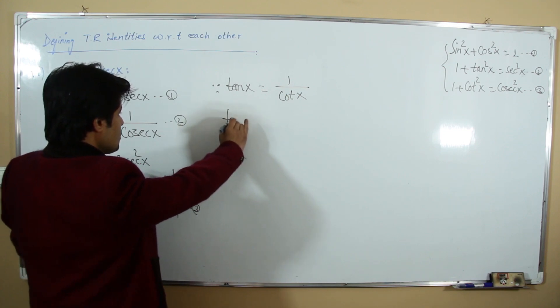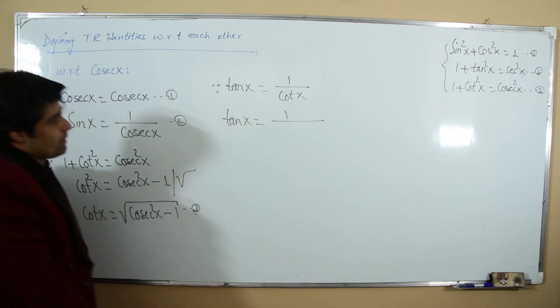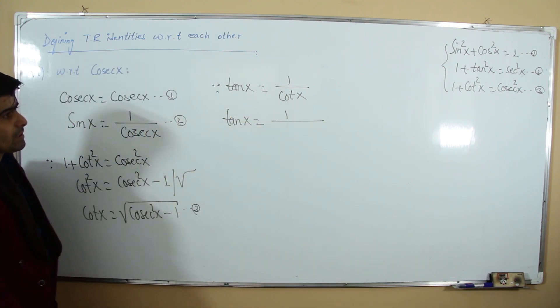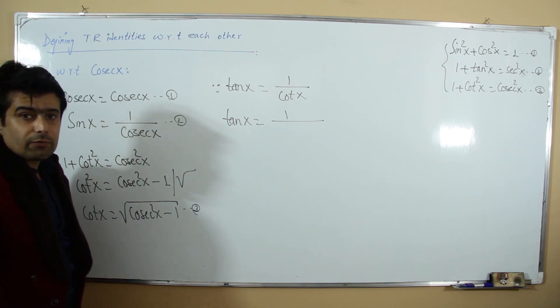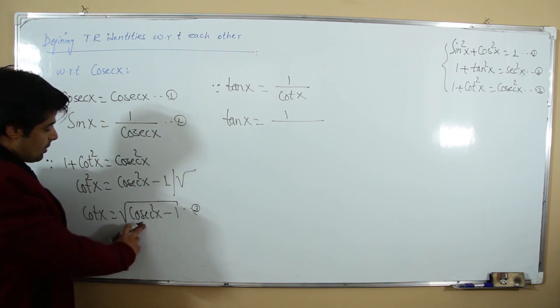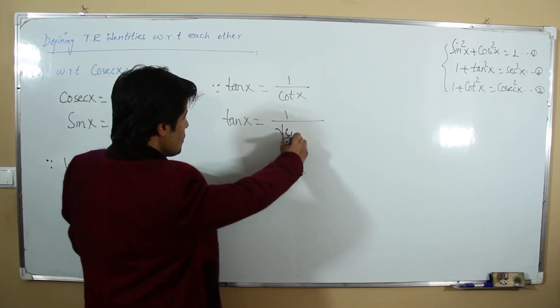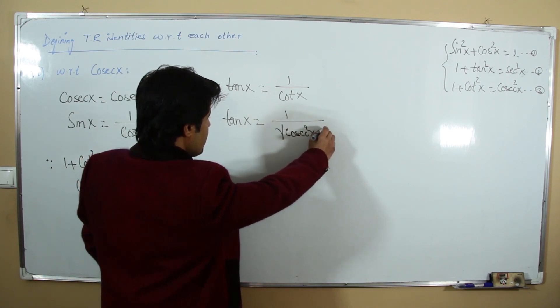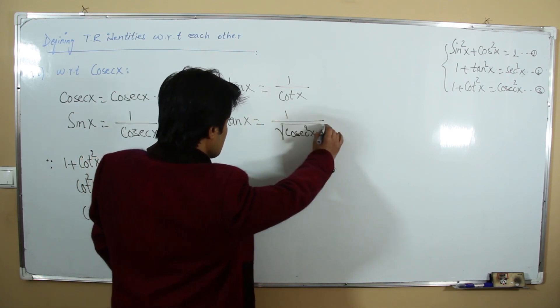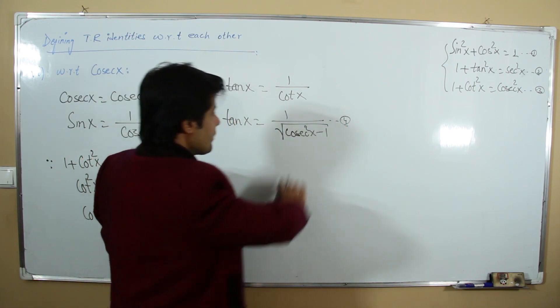Tangent is the reciprocal of cotangent: tan x = 1/√(csc²x - 1). This is our fourth relation.